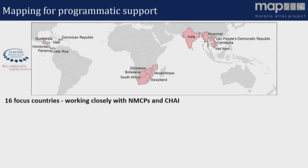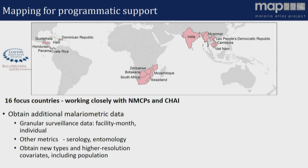We're starting this in 16 countries, working very closely with the Clinton Health Access Initiative and, through them, more closely with national programs themselves. This is all funded by the Gates Foundation. In those countries, we're trying to do two main things. First, we're trying to get better malaria metric data — key amongst this is getting more granular surveillance data: can we get reports of cases at the level of individual health facilities and months rather than aggregated at the annual level? And in some cases, can we get reports of individual cases and where those households are located? We'll also try to get any other useful metrics — serology is something we're putting a lot of time and effort into building analytical frameworks around.